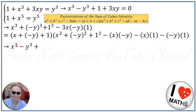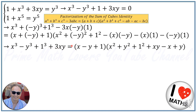Simplifying, we get x cubed minus y cubed plus 1 plus 3xy equal to (x minus y plus 1) times (x squared plus y squared plus 1 plus xy minus x plus y). From the first equation we know the left-hand side equals 0, so the right-hand side is also 0.